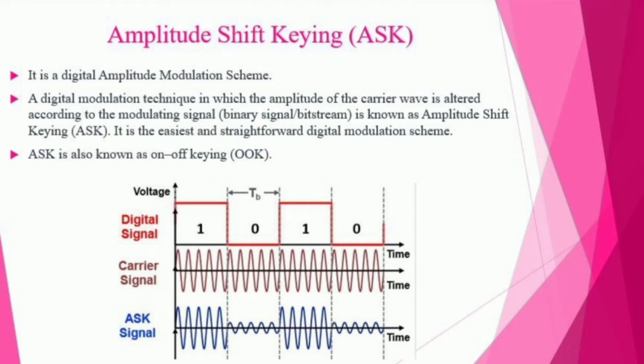ASK is the easiest and most straightforward digital modulation scheme. The input signal to be modulated is a digital signal in terms of ones and zeros, while the carrier signal is a sinusoidal signal. When the input is one, the amplitude of the ASK modulated signal equals that of the carrier signal. When the input is low, the amplitude is zero. Hence ASK is also known as on-off keying.